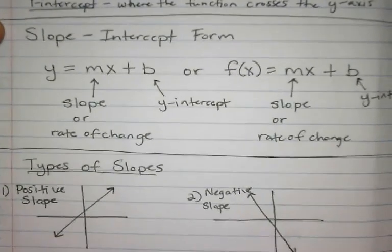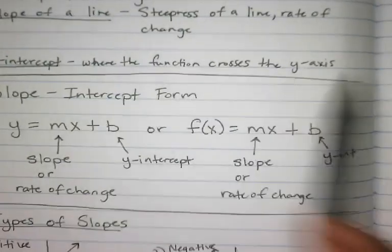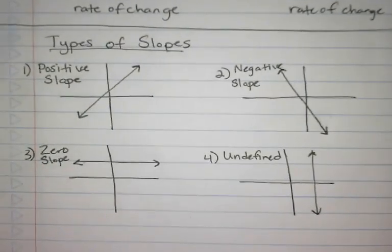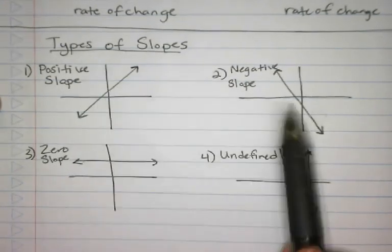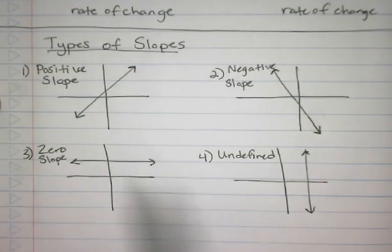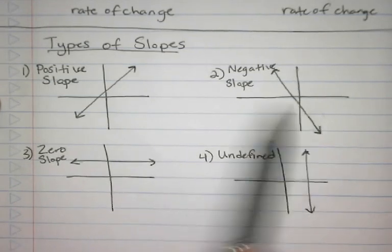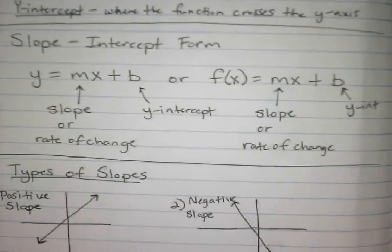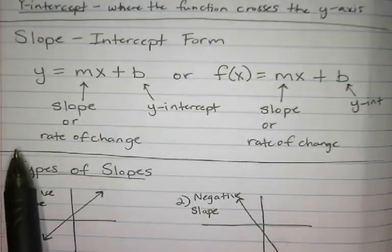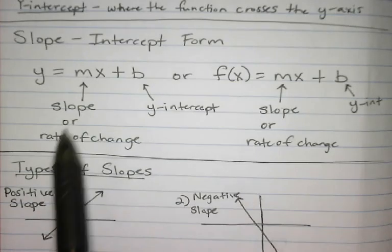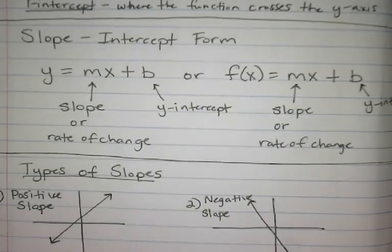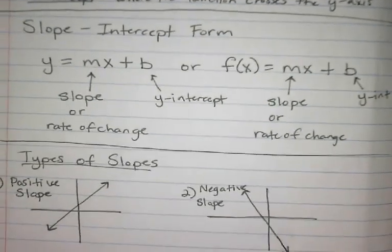Then we talked about the y-intercept — when the line crosses the y-axis. So when we get into the actual equations, where the line crosses the y-axis would be your y-intercept; that would be an actual numeric value. And then we're talking about slope-intercept form: y equals mx plus b. The m represents your slope or rate of change, and the b represents your y-intercept.